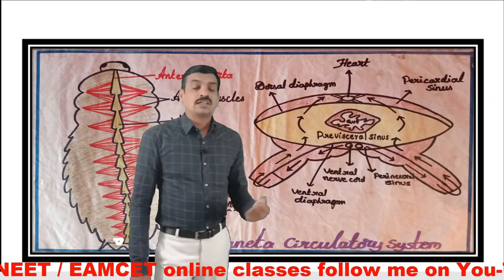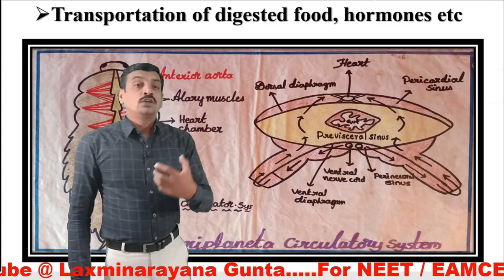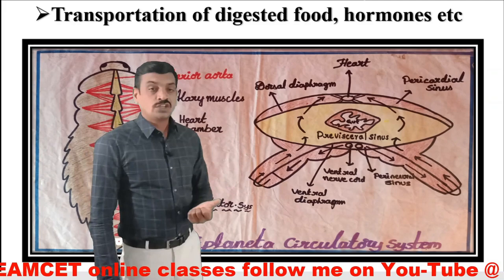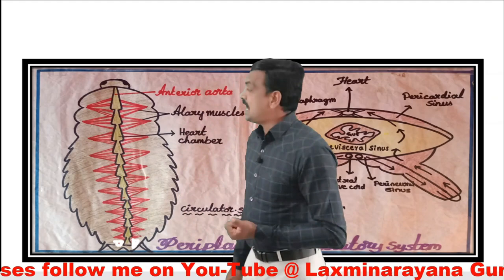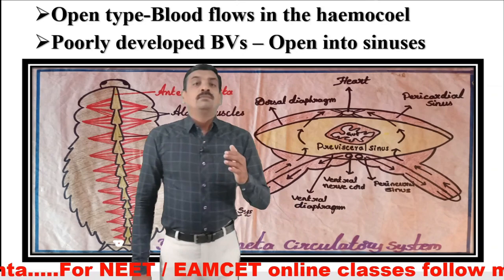What is the role of the circulatory system? The circulatory system is very much essential for the transportation of digested food, the transportation of excretory products to the excretory organs, and also the transportation of hormones to the target organs. The circulatory system in cockroach Periplaneta americana is of open type.